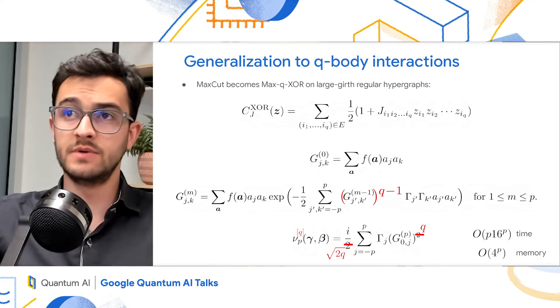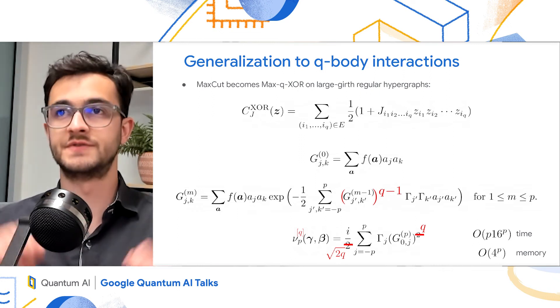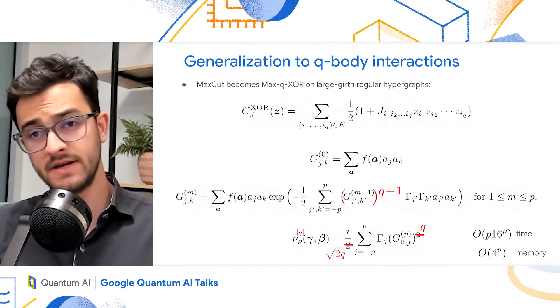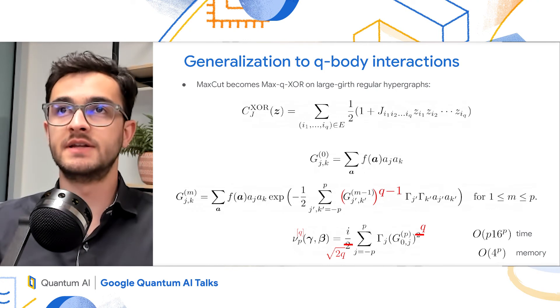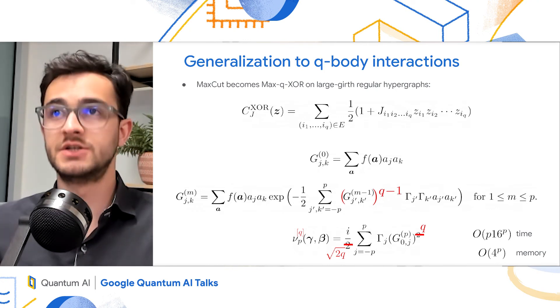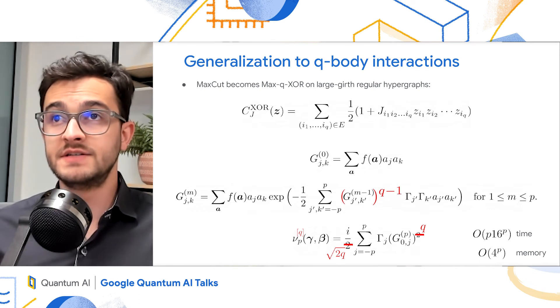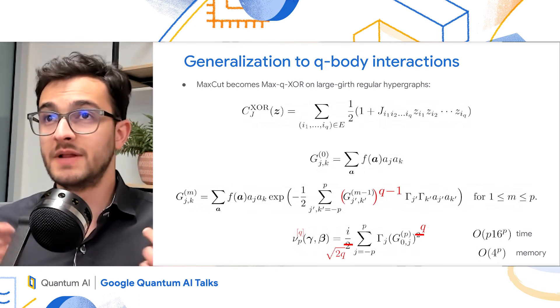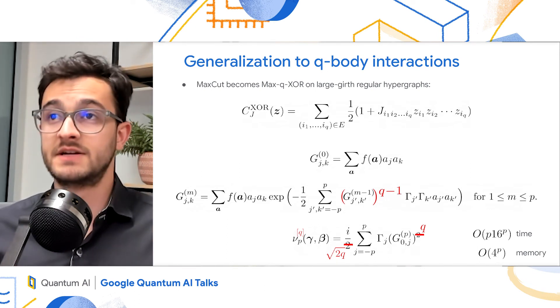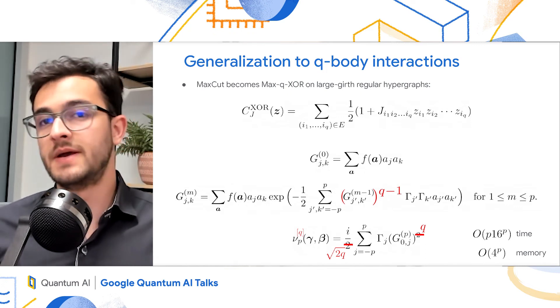In the last equation, you raise to q instead of 2. And there's some constants that you need to change. But you can see that you can generalize very simply the iteration from MaxCut to the iteration for Max-Q-XOR. And you can see that the complexity, time complexity and memory complexity are exactly the same and do not depend on q.